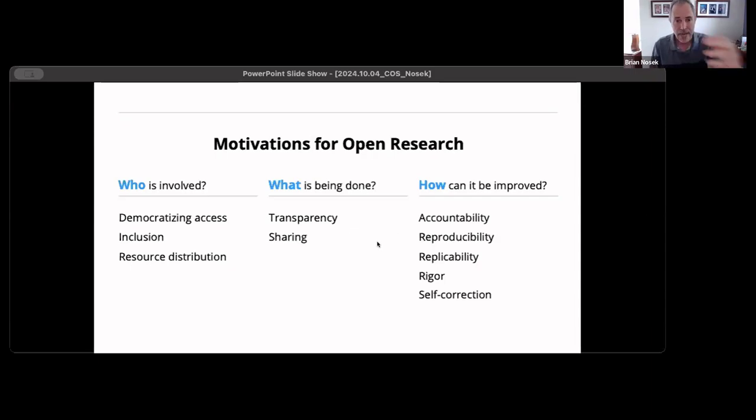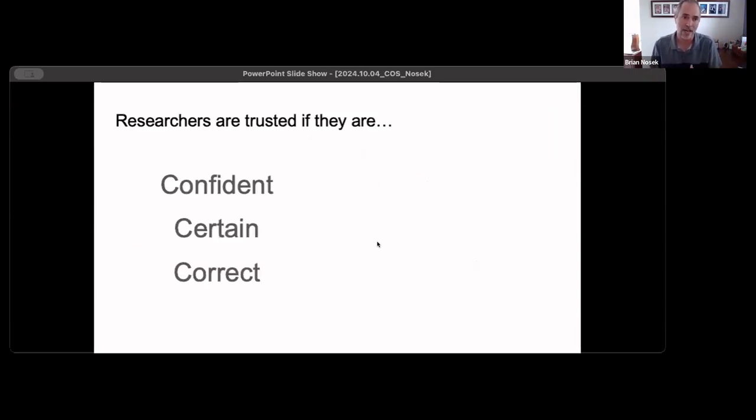Now, the impact of that, the why of all of that, has many different ways that we might think about how open research helps to advance discovery of knowledge, treatments, and solutions for the world. I want to zoom in on one particular area where open research really has an impact on how science is understood and recognized and valued in the public sphere.